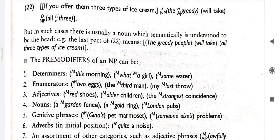Now let's look at pre-modifiers of a noun phrase. Determiners can be used as pre-modifiers: 'this morning' — 'this' is a determiner; 'what a girl' — 'what' is a modifier; 'some water' — 'some' is a modifier. Enumerators are used before the noun: 'two eggs', 'third man', 'my last throw'. Adjectives are also used before the noun: 'red shoes', 'older children', 'the strangest coincidence'.